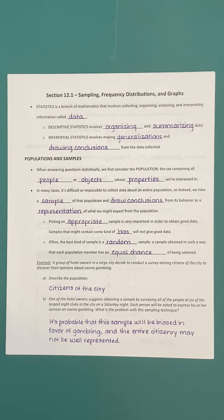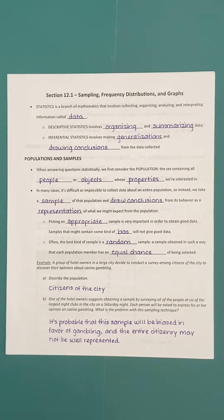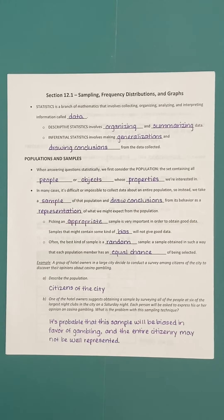In many cases, however, it's difficult or even impossible to collect data about the entire population. Maybe we can't actually go to every person in the population and collect data about every individual. So instead of collecting data about the entire population, we may just take a sample — a subset of that population — and then draw conclusions from what we see in the sample.